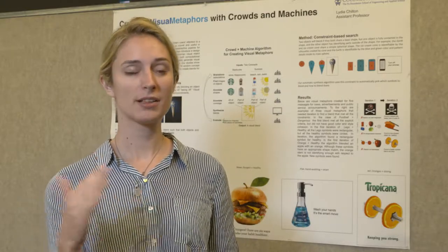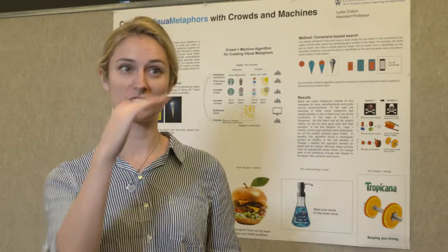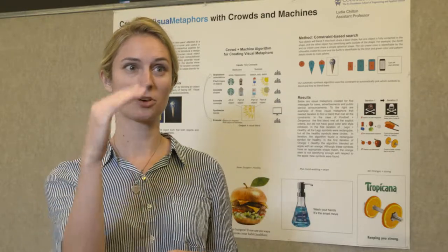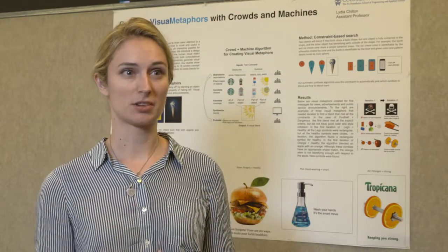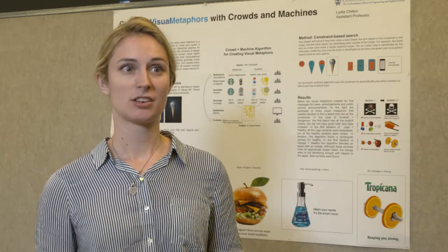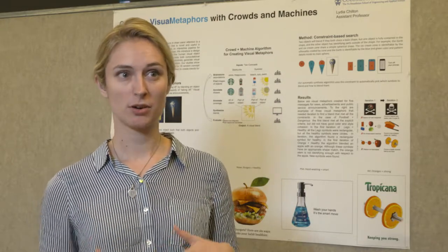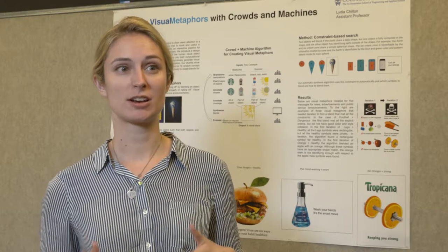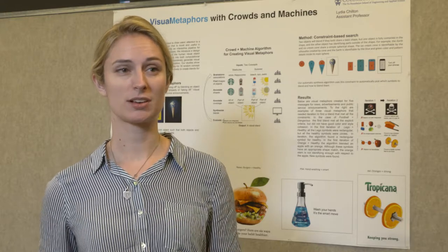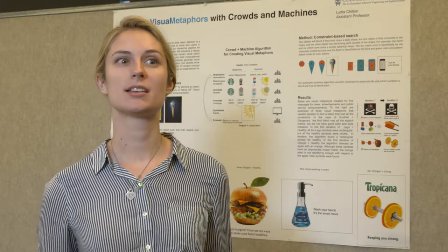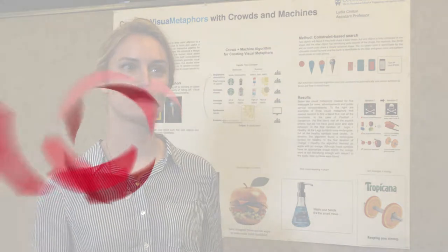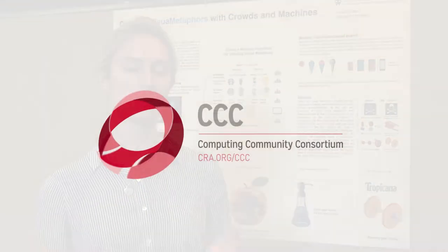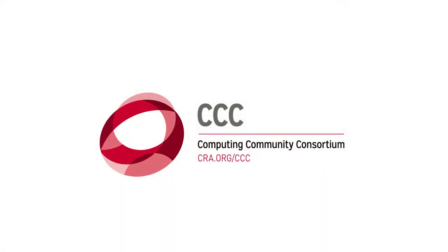We have an algorithm that combines people and machines that starts with a brainstorm and takes it through all the steps to come up with a solution. It turns out we can pose this as a constraint-based search, and we can find many ways that computers can help us search for the right images and the right meanings in order to convey the message.